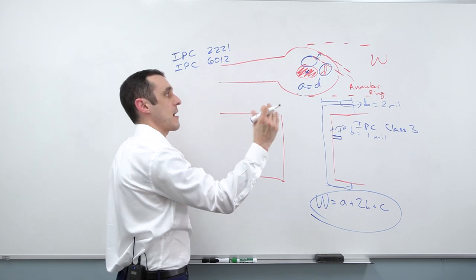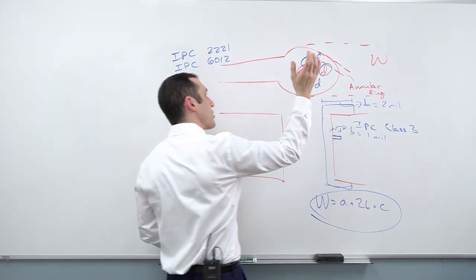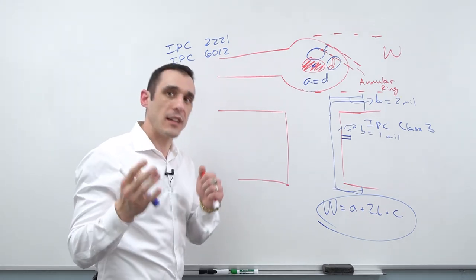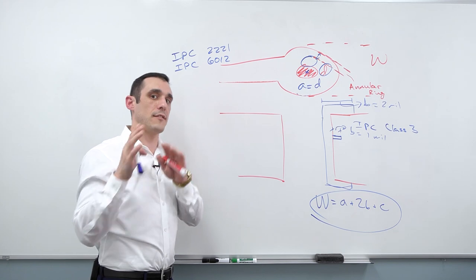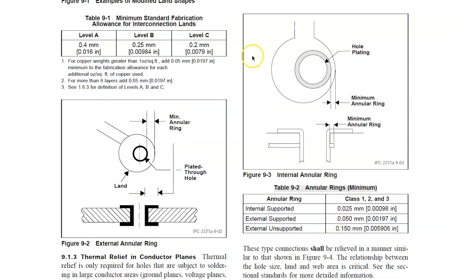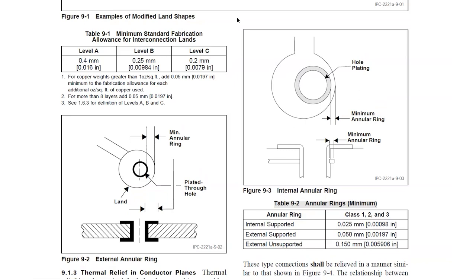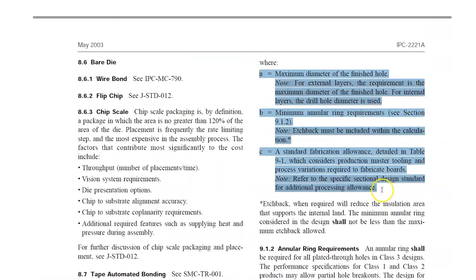So what is C? C is based on the fabrication tightness or the fabrication allowance. And essentially, it's related to how much wander does your fabricator allow their drilling machine to have when they're placing these drill hits in these pads. So there are three different levels of producibility associated with C. So I'm going to actually show you in the IPC standards what those numbers are, and then I'll give you a little bit of guidance on how to actually size these vias. So what I'm looking at now is table 9.1 and table 9.2 in the IPC 2221 standards.